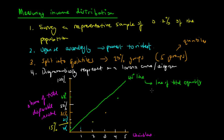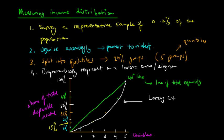The final quintile accounts for the remainder — 100% minus 65%, so around 35% of total income. Connecting these data points gives us what is called the Lorenz curve, which diagrammatically represents the income distribution in an economy. While it shows how far the Lorenz curve deviates from the line of total equality, more importantly it gives us a way of measuring the Gini coefficient.